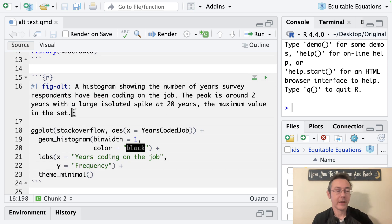So to get alt text into a Quarto document, you use a chunk option with a hash pipe and the chunk option is fig-alt. Here you can see the exact text that we saw when I was over in Chrome a second ago: A histogram showing the number of years survey respondents have been coding on the job. The peak is at around two years with a large isolated spike at 20 years, the maximum value in the set. Here we see I've got those three key elements that I showed on a slide a minute ago. I've got the type of plot, the variables that are included in the plot, and the overall trend of the data.